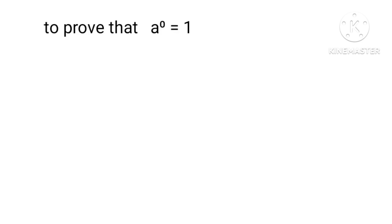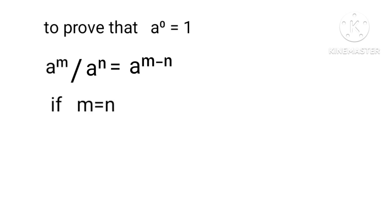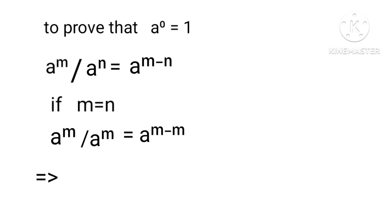As we know, a power m over a power n equals a power (m minus n). If m equals n, then a power m over a power m equals a power (m minus m), which implies that a to the power 0 equals 1.